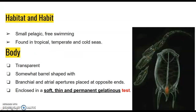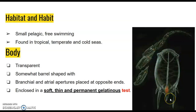Salpa are small and pelagic in nature, that is they are seen in the water column, and they have a free swimming existence. They are found in the tropical, temperate and cold seas. When we speak about the body, as the picture indicates, they are transparent in nature and almost barrel in shape.